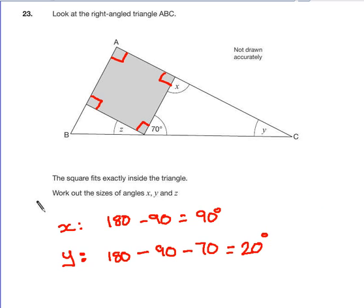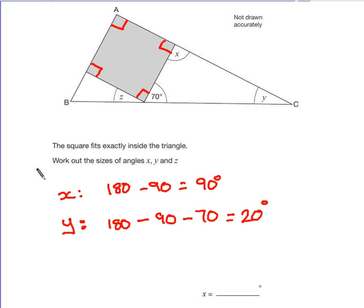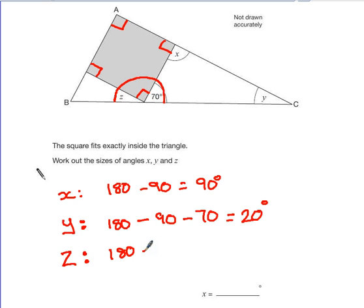Now, I know just from looking at this that Z must also be the same thing. But let's just prove that Z is also 20 degrees. Z here is on a straight line, so that adds up to 180 degrees automatically. We have a right-angle in the middle, so that's 90 degrees. And 70 degrees is also part of this straight line. So, if we take away those two angles, what we're left with must be 20 degrees.